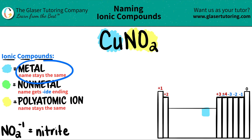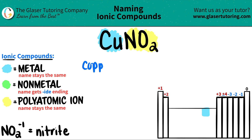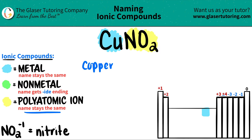The metal name, since it comes first, always stays the same. Since this was copper on the periodic table, Cu is copper, so I'm just going to write copper. And the polyatomic nitrite — that name always stays the same too. It's a little hard in the beginning because you've got to memorize all these polyatomics, but once you have them memorized, you're good.